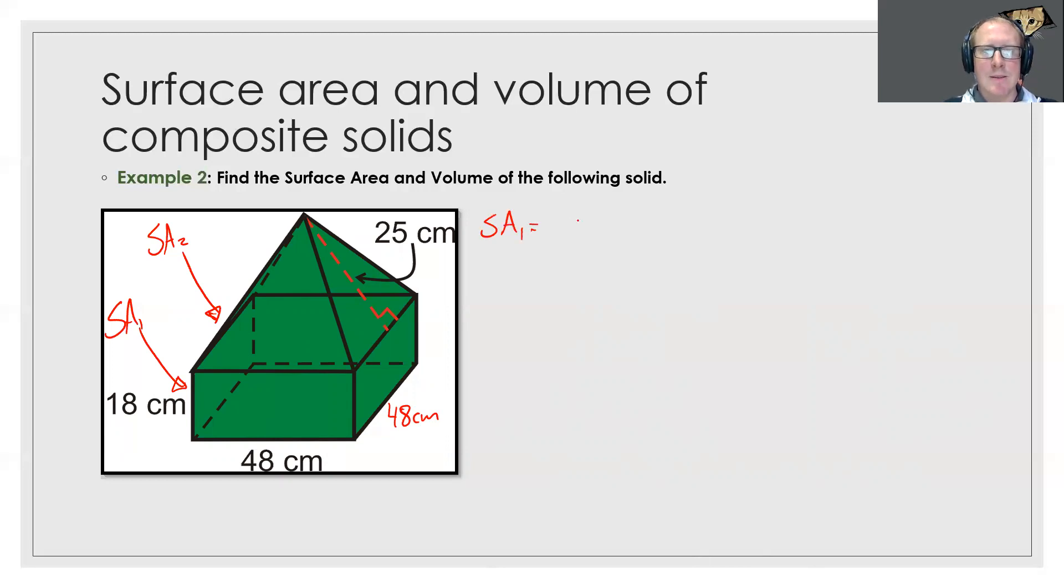Our surface area at the start, well let's do the front which is going to be 18 times 48. Now the back is the same and the sides are the same so we can times that one by 4.